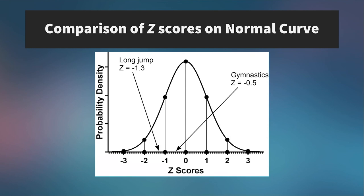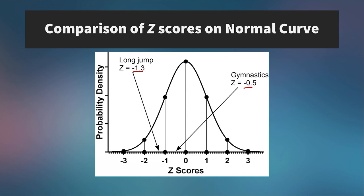Here is an example of how we would compare two very different activities using z-scores. Let's say you participated in both a long jump and a gymnastics competition. You got a z-score of negative 1.3 in the long jump and negative 0.5 in gymnastics. You might learn that you were below the mean in both events, but you're a little better at gymnastics — so you could work on those skills to bring yourself up at least to average.